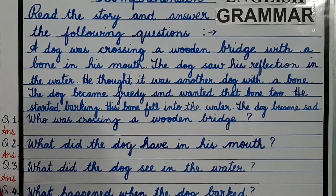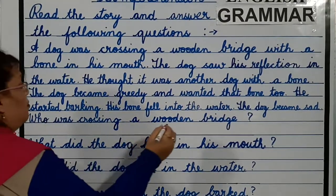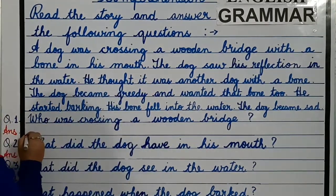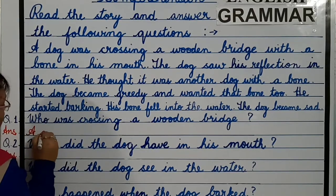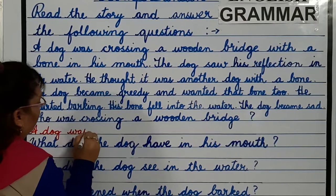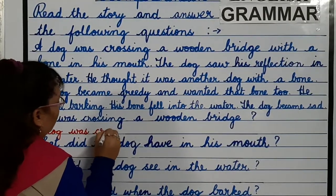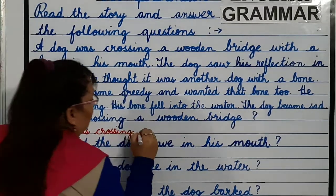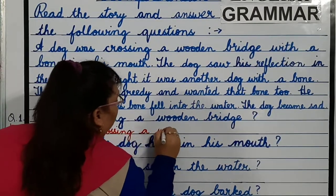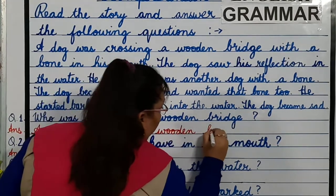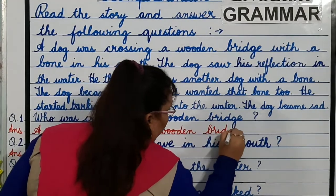Now students let's begin with the first question. Who was crossing a wooden bridge? A dog was crossing a wooden bridge.